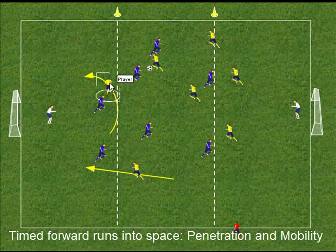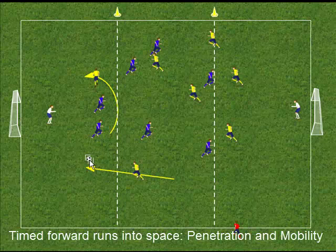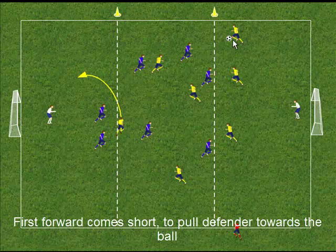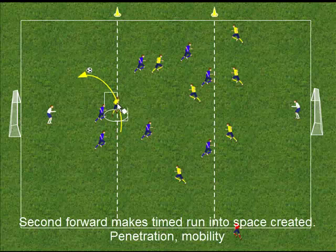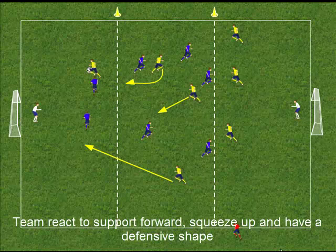The first option might be the forward in the channel that has been created. The second option might be a wide midfield player making a supporting run behind the defence. Here the first forward comes short and draws the defender with them, creating the space for the second forward to make a penetrating run into the space created. As the ball is travelling, it is important that the midfield players and the forward look to support the player on the ball.